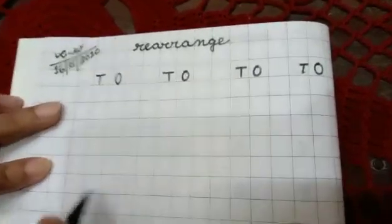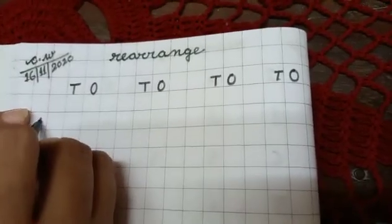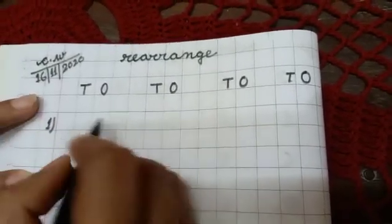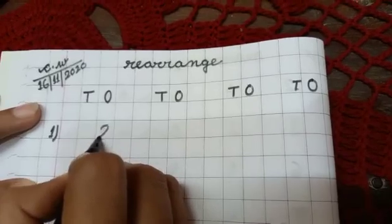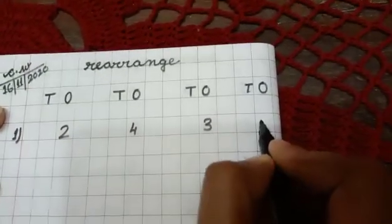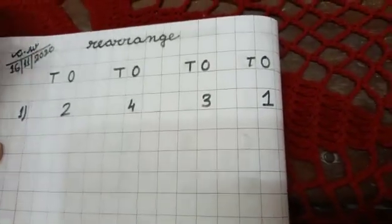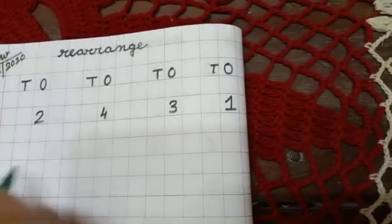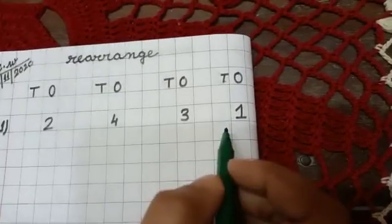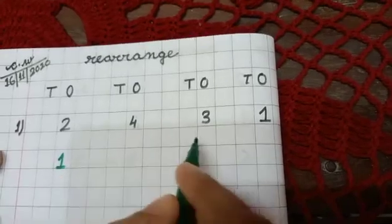Okay. Now first you write the numbers. Number 1. I am writing here 2, 4, 3, 1. So write the answers. First what will come? 1. So write here 1. Then which one will come?